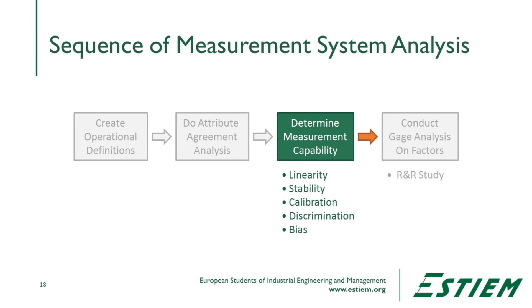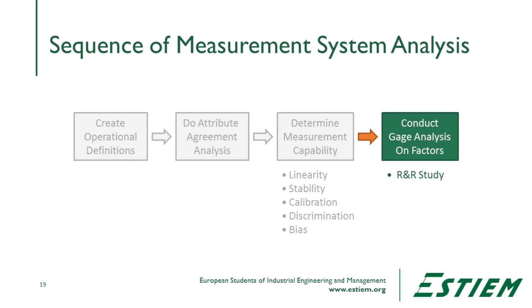Next we look at the measurement system itself to address repeatability. Has the measurement system physically been calibrated? Is it linear over the scale? Is it stable in time? Does it have enough digits to properly discriminate? Does the system have any bias built in? After addressing all of those things, we compare the reproducibility of the human component with the repeatability of the machine component — and that's when we perform what's called a gauge R&R study.